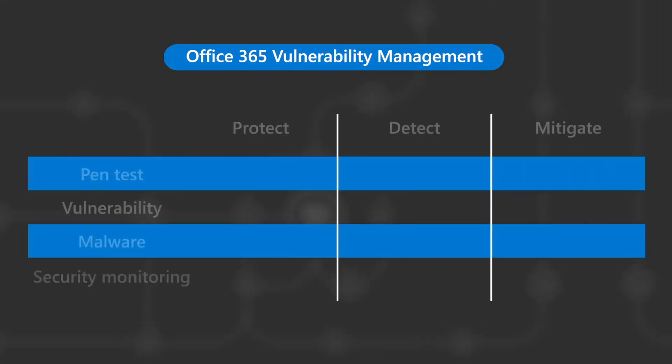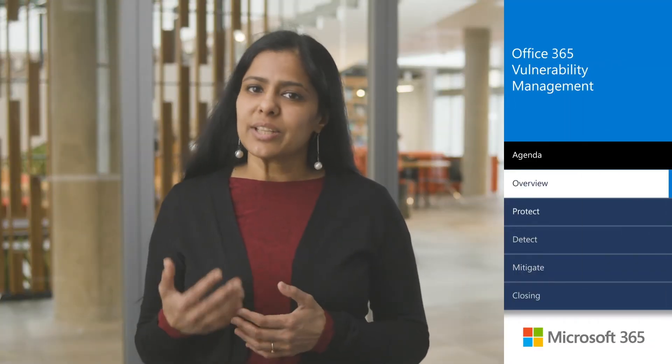Office 365 uses a three-stage approach to vulnerability management: protect, detect, and mitigate. Let's look at how Office 365 assets are protected against known vulnerabilities.